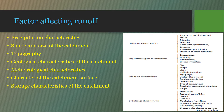Under basin or catchment characteristics, the first factor is the shape and size of the catchment. The catchment shape can be fan-shaped or fern/leaf-shaped. In a fan-shaped catchment, all tributaries are approximately the same size, which creates greater runoff. In a fern/leaf-shaped catchment, tributaries are generally of different lengths and meet the mainstream at regular intervals, resulting in comparatively less runoff than the fan-shaped catchment.